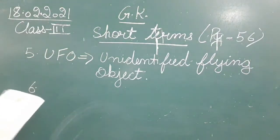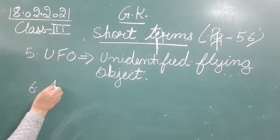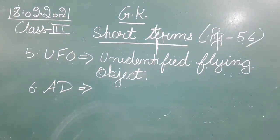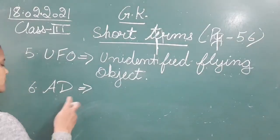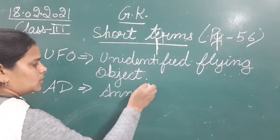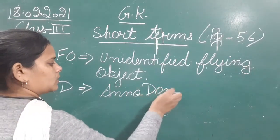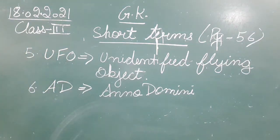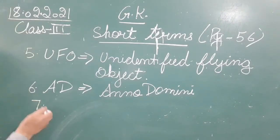The sixth is AD. We use AD while writing historical years or dates in a legal or formal context. The full form of AD is 'Anno Domini'. Clear.